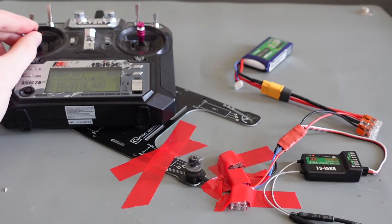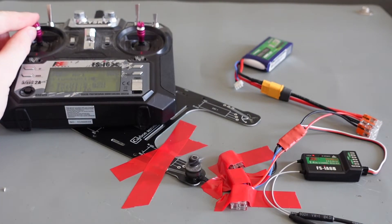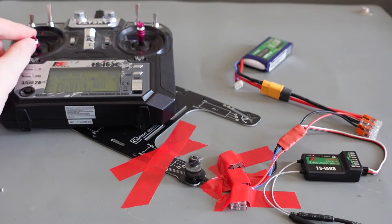Now gradually increase the left stick to start the motor. You are now controlling the motor speed from channel 3 of the transmitter.